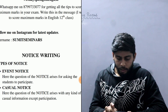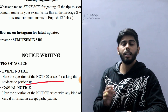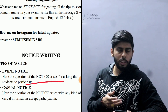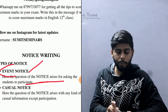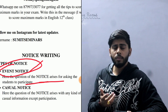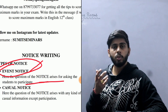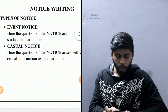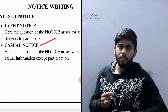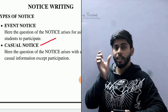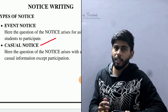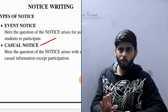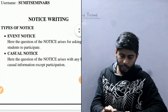Event notice is when you are asking students to participate in something. If we are writing a notice in any organization to inform members — in a school setting that means teachers and students — and the notice is about an event like a function, competition, charity, or any organized event, then that is an event notice. Casual notice is different — in a casual notice we don't talk about participation. For example, if your school ID card is being issued and you need to submit a photograph to your class teacher, a notice about that would be a casual notice. I hope you understand the difference between event and casual notice.